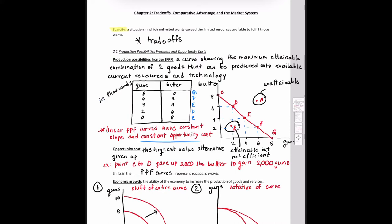So in this example, if we're going to move from point C to point D, if we want to gain 2,000 guns, we have to give up 2,000 pounds of butter in production. We move from 8,000 to 6,000 pounds of butter in order to go from 0 to 2,000 guns. You can do that along the entire curve. Since we have a linear line with a constant slope, we have a constant opportunity cost.